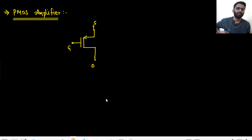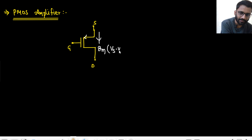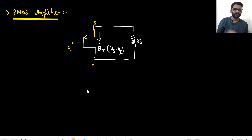The same thing applies for a PMOS amplifier. The current here is gm into Vsg — in case of PMOS it is Vsg (Vs minus Vg). There is also R0 resistance. In PMOS, we have gmVsg current flowing. This arrow on the symbol is replaced with 1/gm. The current is gmVsg, the source potential is here, the gate potential is here, and between source and drain we have R0 resistance.